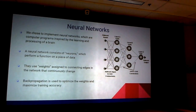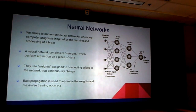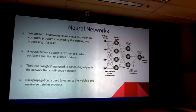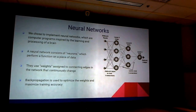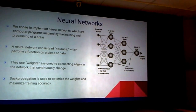All networks consist of neurons, and can range from simple networks to large, complex, intertwining networks. They have different activation functions that are able to take individual pieces of data and process and filter them.